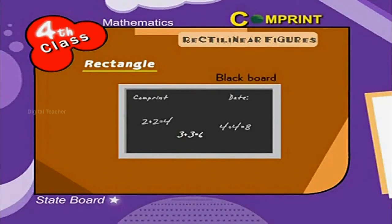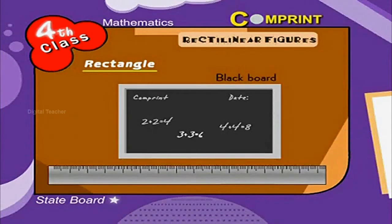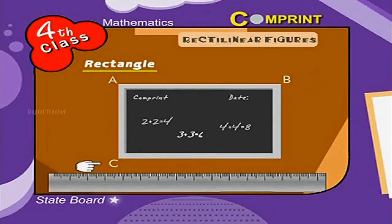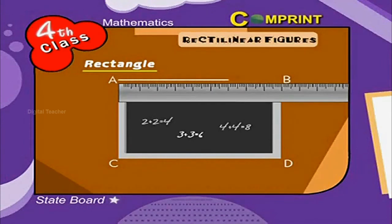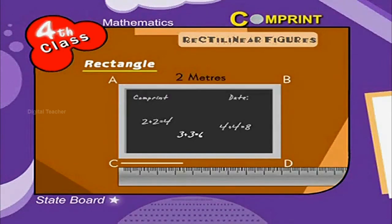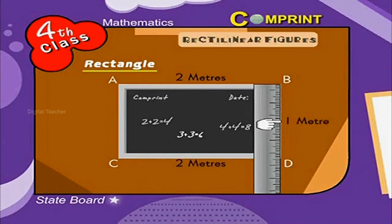Look at the picture. Let us take a scale and measure it. Let us mark the corners as A, B, C, and D. AB is equal to 2 meters, CD is equal to 2 meters, BD is equal to 1 meter, and AC is equal to 1 meter.